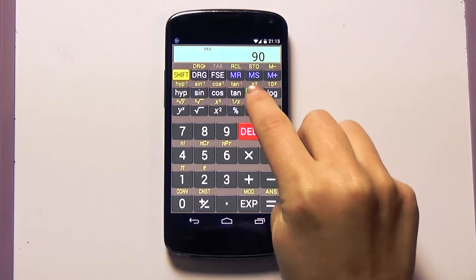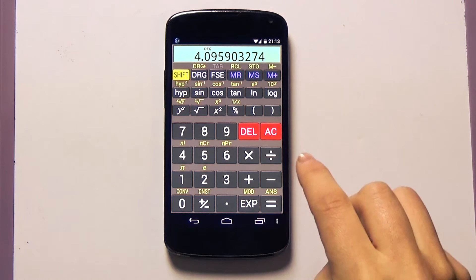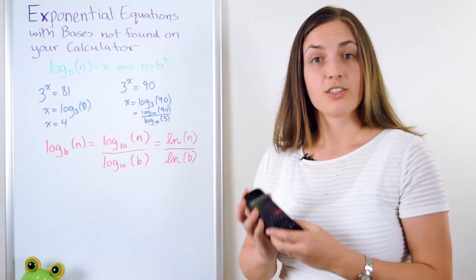90 natural logarithm divided by 3 natural logarithm. Again we get 4.0959. So it works.